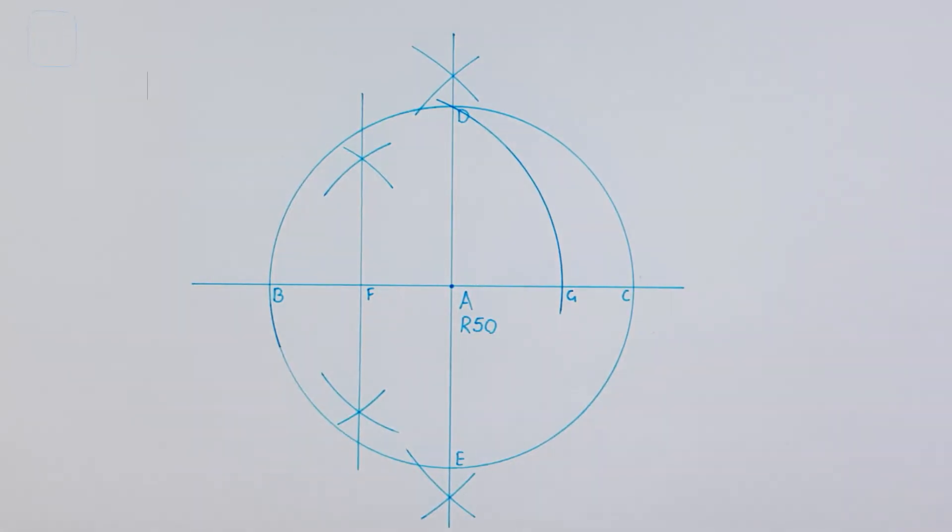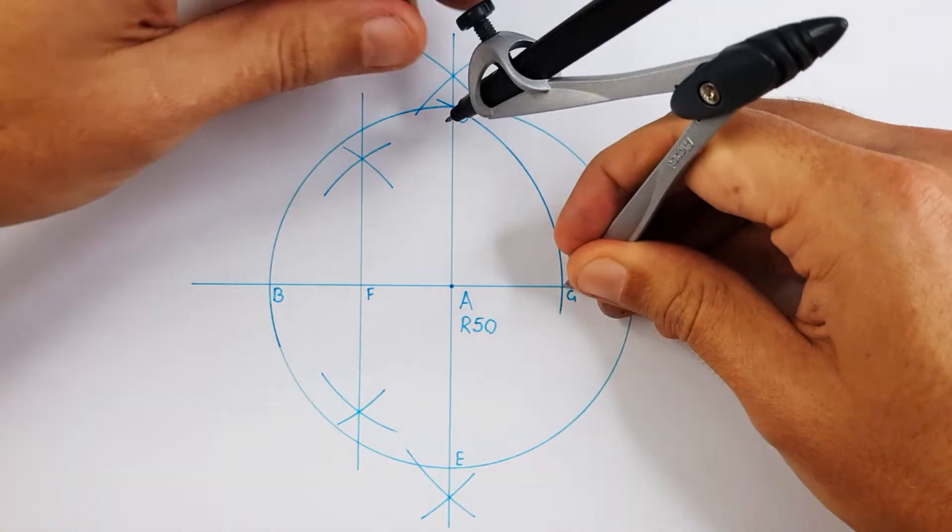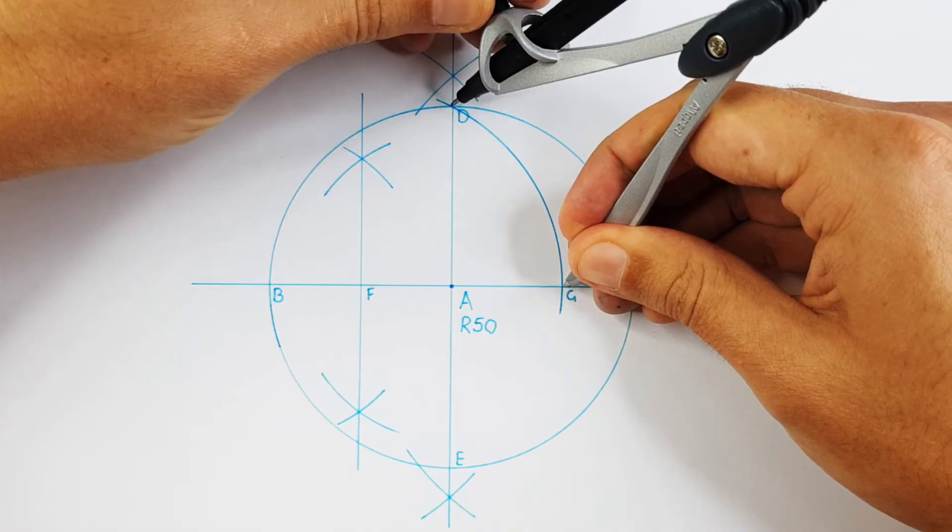Place your compass on point G and adjust it to point D. Label this as your side length for your pentagon.